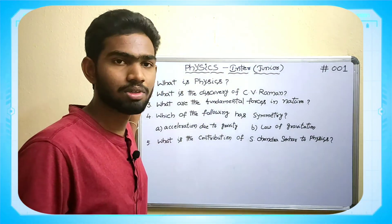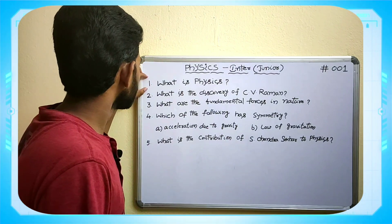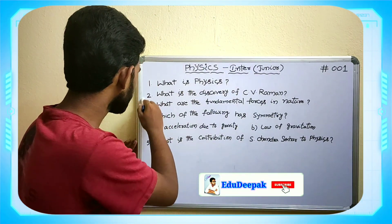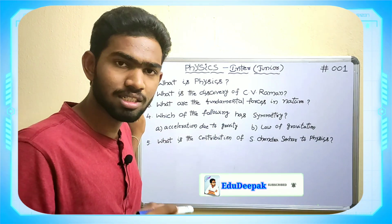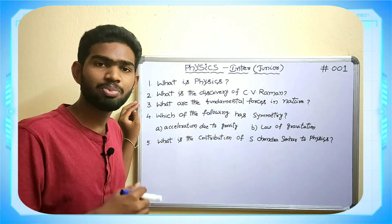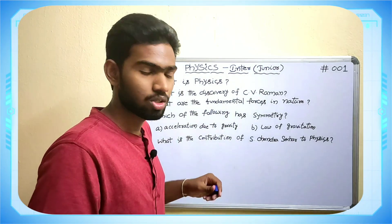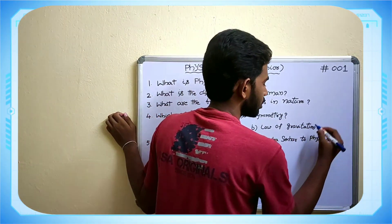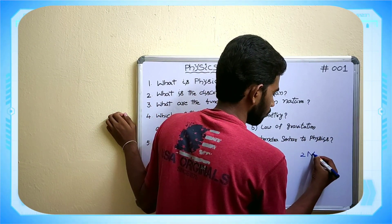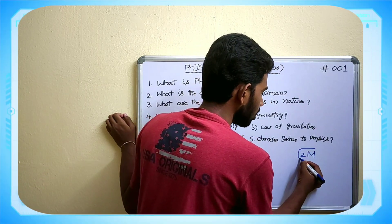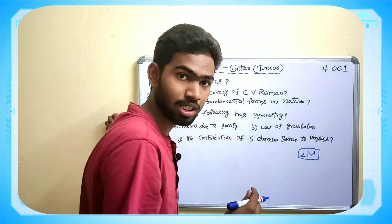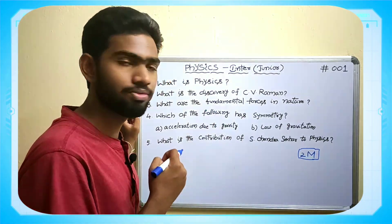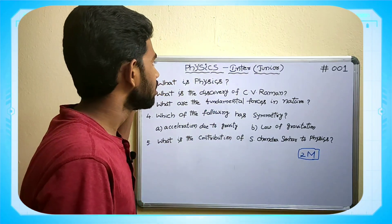This Physical World chapter carries two marks, which is a two-marks question. This chapter mainly consists of five questions. If you learn these five questions, which are very simple, you can score two out of two marks — specifically the first question — in the intermediate first year physics examination paper.